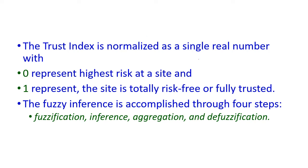The trust index is normalized as a single real number that falls between 0 and 1. If it is 0, that represents high risk at a particular site. If the trust index value is 1, the site is totally risk-free or a fully trusted site. The fuzzy inference is accomplished through four steps: fuzzification, inference, aggregation, and defuzzification.